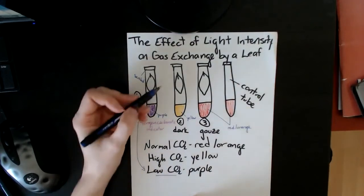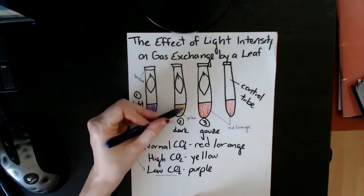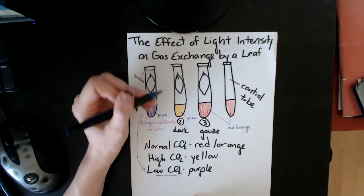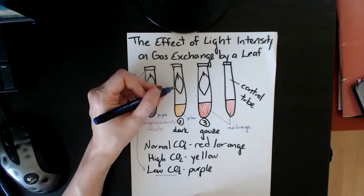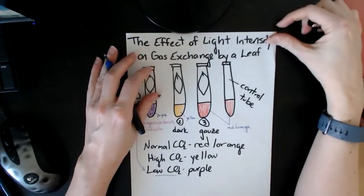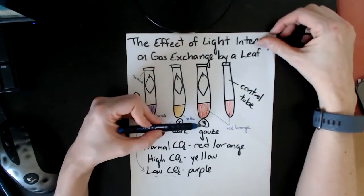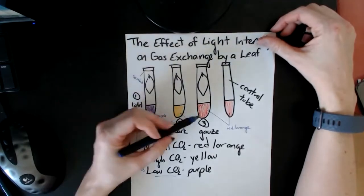The idea is that there is more photosynthesis happening than there is respiration. The high CO2, which is the one in the dark, is yellow because this leaf has been able to respire but it hasn't been able to do any photosynthesis. Respiration produces CO2, right? The control tube, nothing has happened, so you should see no color change.